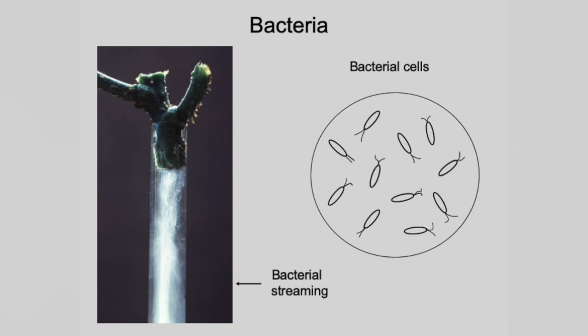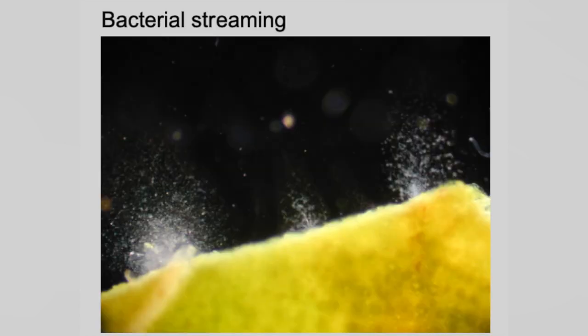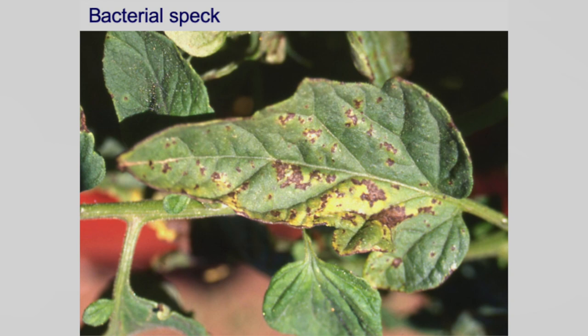Sometimes bacteria will cause bacterial wilt — we don't have much of that here fortunately. To diagnose it, if somebody gives me a tomato leaf and wants to know what it is, I'll chop it up in a drop of water, put it under the microscope, and if you see little streams of bacteria coming out you know you have a bacterial disease. These bacteria get into transplant production areas and greenhouses, sometimes just growing on the surface. When you set them out in the field and conditions become favorable, they get into the stomata — the pores on the bottom of the leaf — and when those stomata are wide open that's when those bacteria get in.